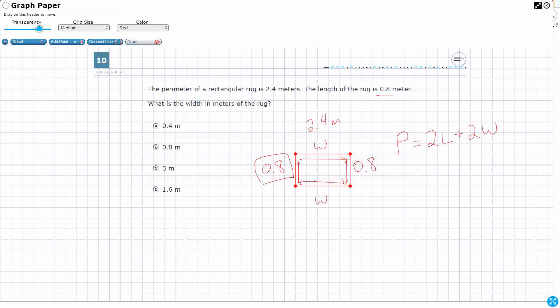And my perimeter is just adding them all up. So 0.8 plus 0.8, right? So what that is, is I'm doubling the length. Doubling the length plus the W plus the W. Now I'm doubling the width.